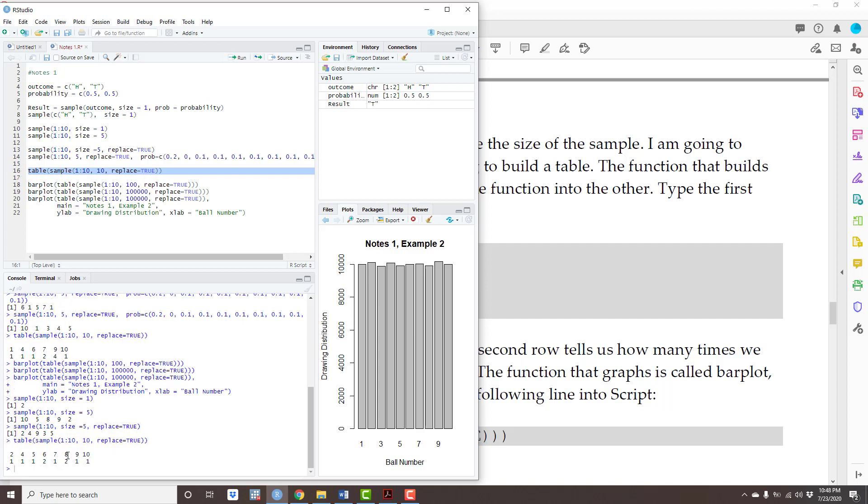2, 4, 5, 6, 7, 8, 9, 10, 1, 1, 1, 2, 1, 2, 1, 1. The first row is the balls that were drawn. The second row is how many times each ball was drawn.